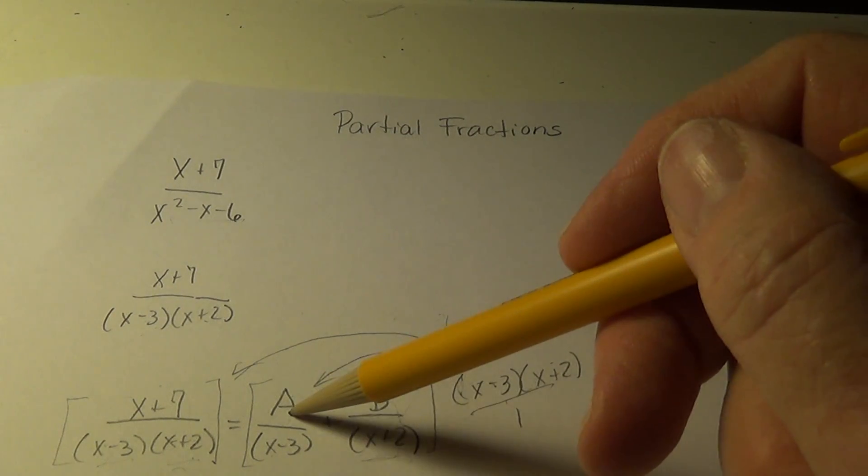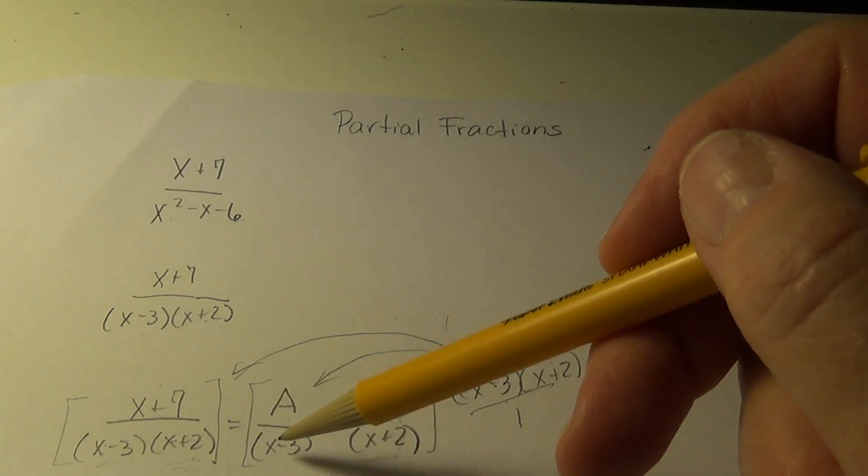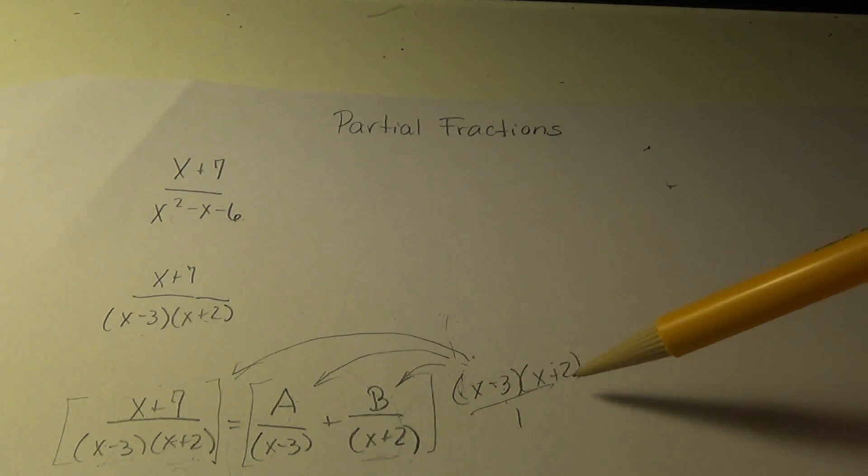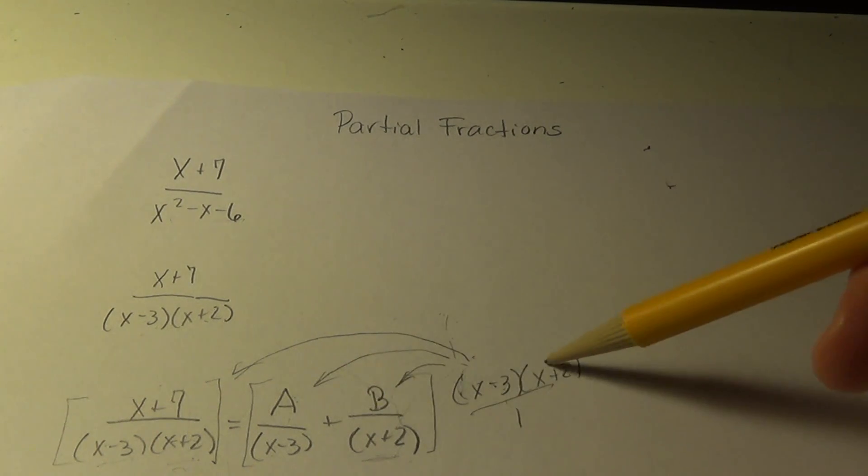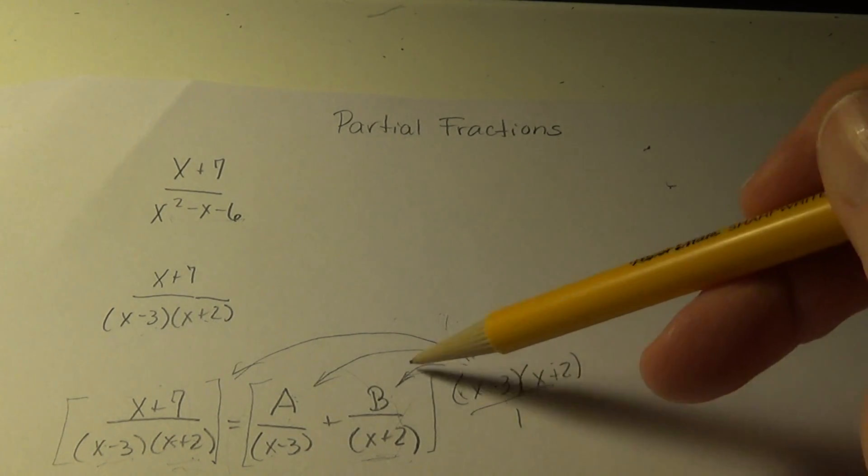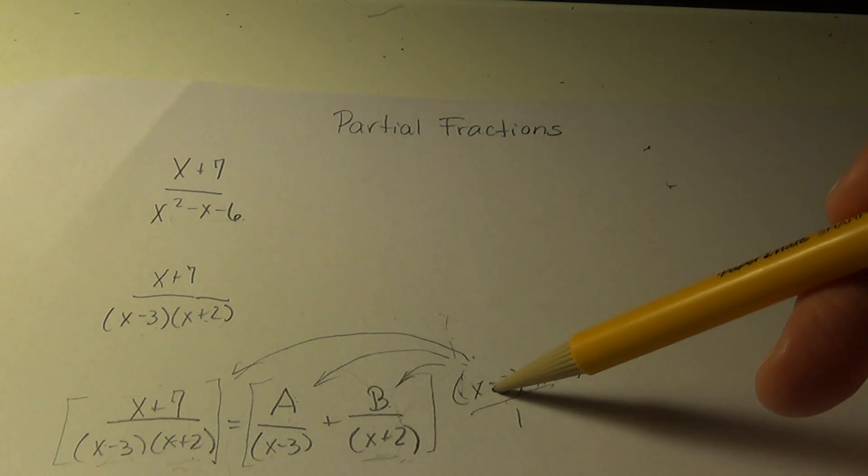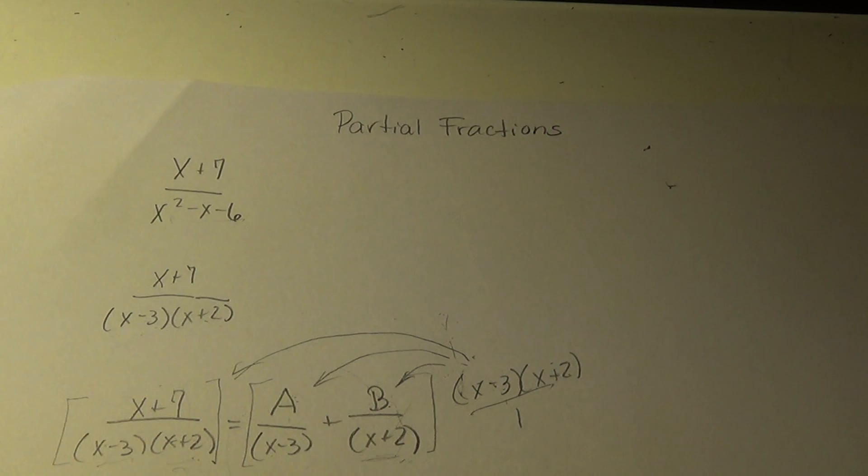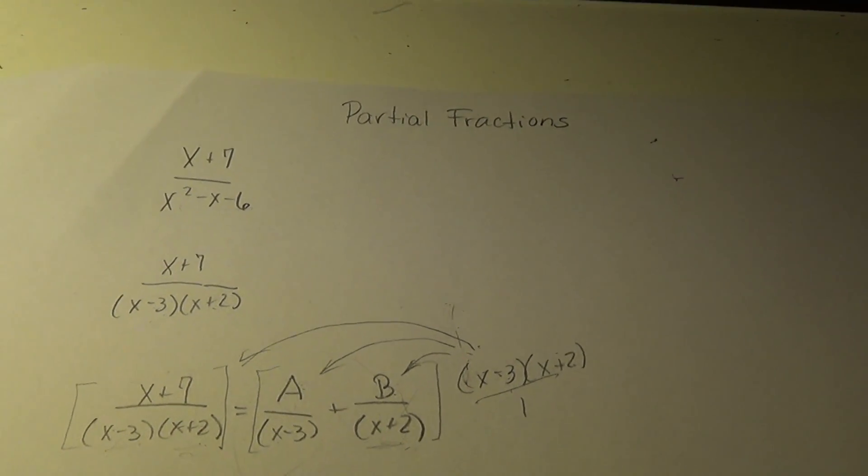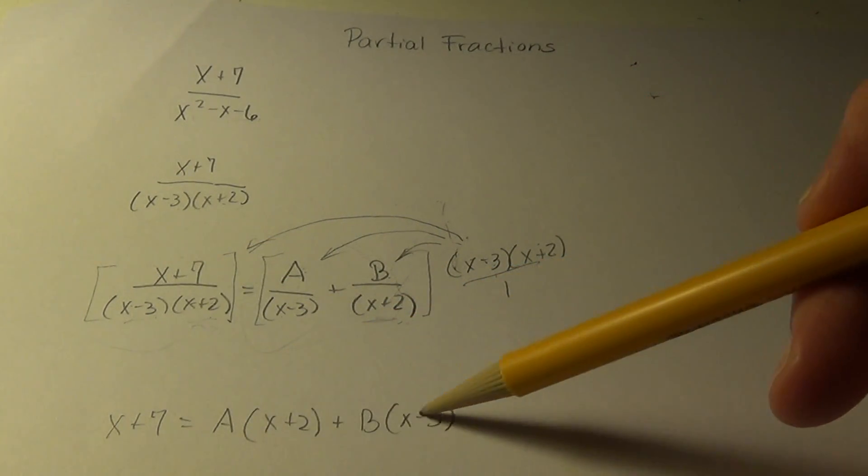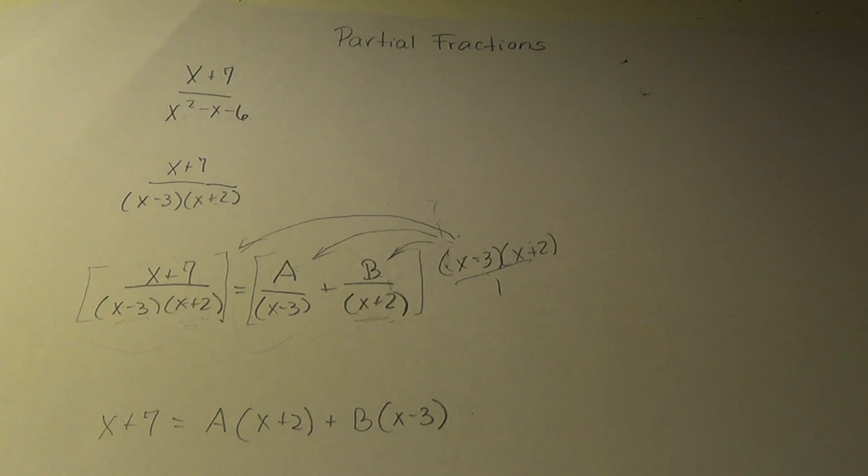When I multiply it times this term, the x minus 3 will cancel the x minus 3, but it will leave an a times an x plus 2. When I multiply this times b, the x plus 2's will cancel leaving a b times this factor. So let's see if I wrote that out. I did. So notice just what I predicted has been written out and observed.